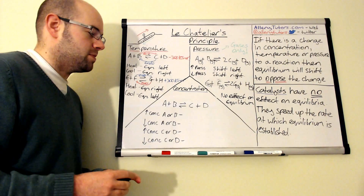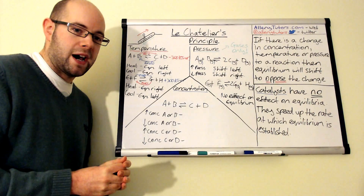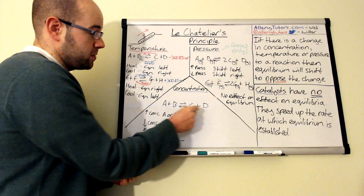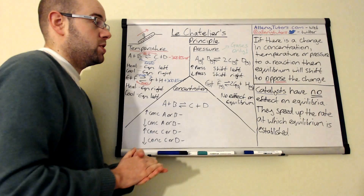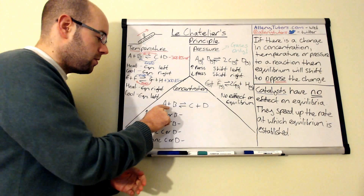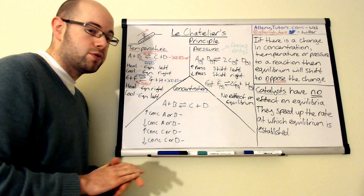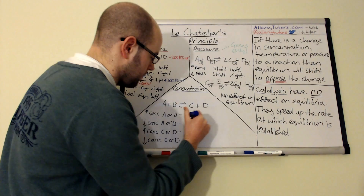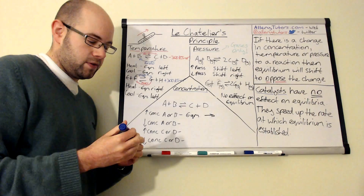Concentration is how many moles of a substance you have in a fixed volume. Using the reaction A + B gives C + D: if we increase the concentration of A or B, according to Le Chatelier's principle the equilibrium will shift to try and decrease the concentration of A and B. It shifts to the right, using them up to produce more product. So increasing concentration of reactants shifts equilibrium to the right.